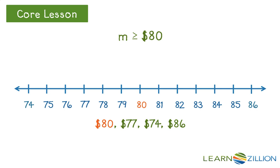I will now use substitution with my first possible solution of $80. Will $80 make the inequality true? Is $80 greater than or equal to $80? As you see, the dot appeared right on 80. So $80 is equal to $80, which does make the inequality true because the symbol is greater than or equal to — in this case, it is equal to.